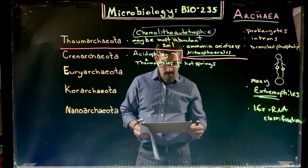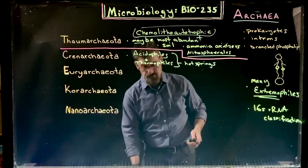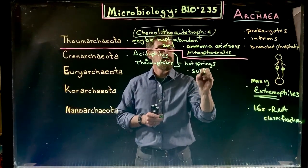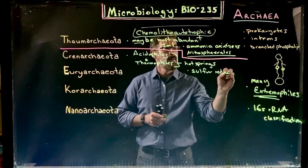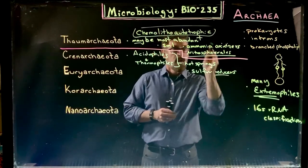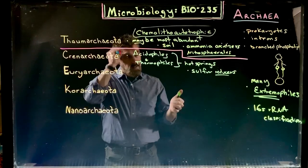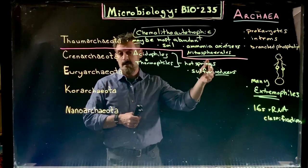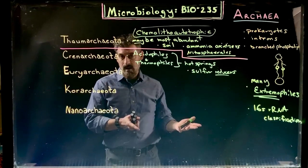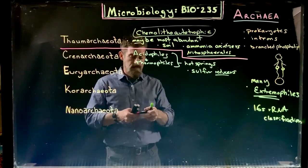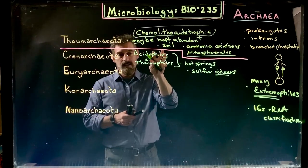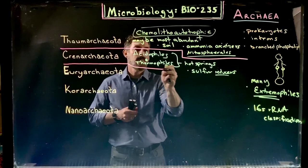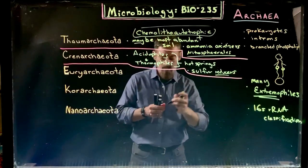The Crenarchaeota also include sulfur reducers. Reduction is where they are gaining electrons, while oxidizing is losing electrons. These organisms are actually able to use sulfur as a final electron acceptor instead of oxygen. That is another way their metabolism differs. So Crenarchaeota have members that can live in extreme environments and also possess unique metabolic traits.